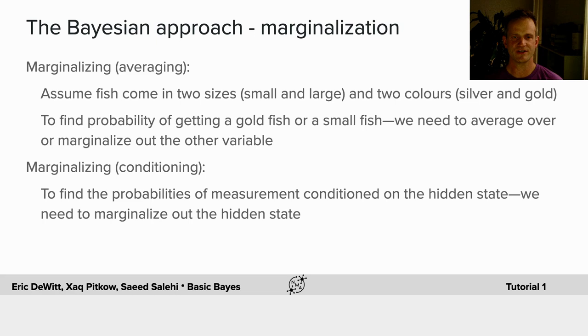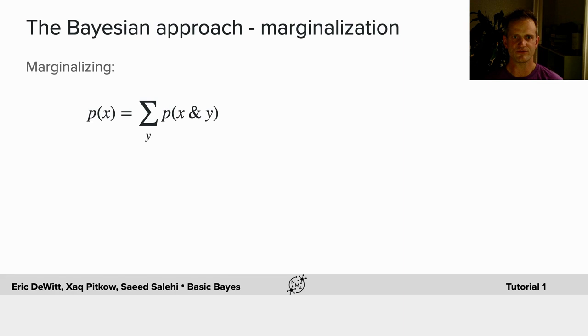Marginalization: when we have two properties or two variables, if we want to find the probability of x, we sum over y. If we want to find the probability of a measurement, we sum over the conditional probability of the measurement given the state, times the probability of the state.